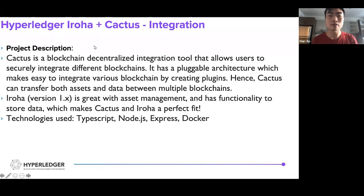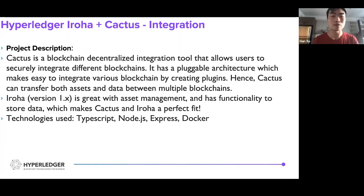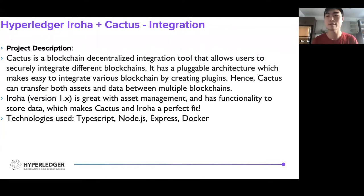Next I'm going to describe what the project is about. Cactus is a blockchain decentralized integration tool that allows users to integrate different blockchains. It has a pluggable architecture so that members from the community can easily integrate various blockchains by creating plugins. Currently, Cactus already had plugins for Quorum, xDai, Fabric, Besu, and so on. In this way, Cactus can utilize these plugins to transfer both assets and data between multiple blockchains.